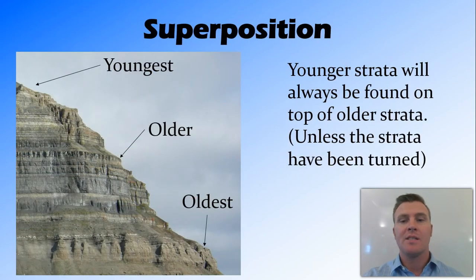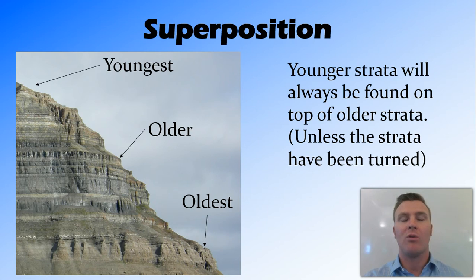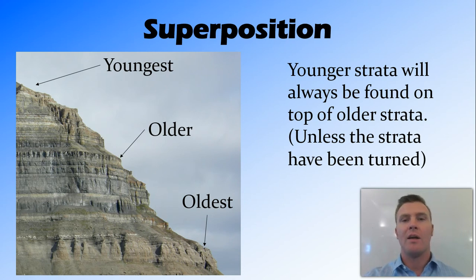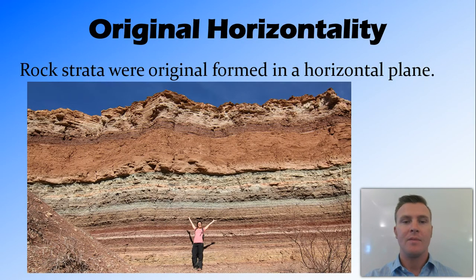The second rule, superposition, states that younger strata will be found on top of older strata. This makes sense because you can't have a higher rock form without a lower rock for it to sit on. So the youngest rock is at the top, older rock below that, and the oldest rock at the bottom. This is always true unless the strata have been turned around — folds can bend strata more than 90 degrees, putting the younger layer on the bottom.